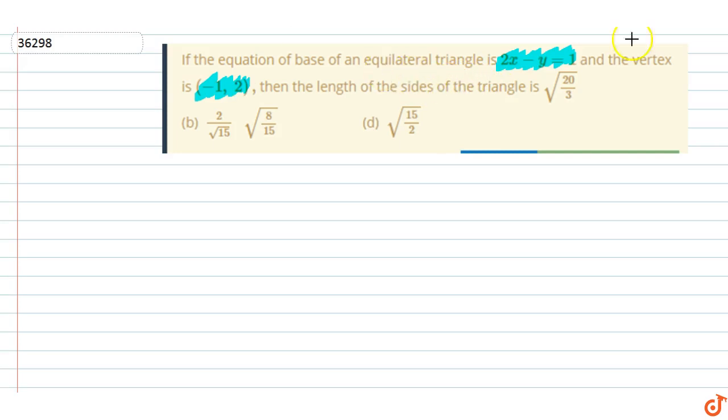So if we construct a triangle, this is our triangle. Label the vertices as A, B, and C. Since it's an equilateral triangle, each angle is 60 degrees.